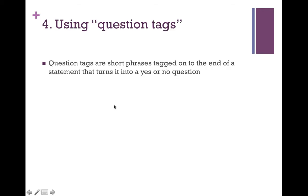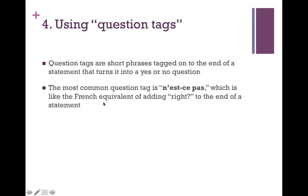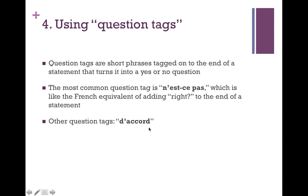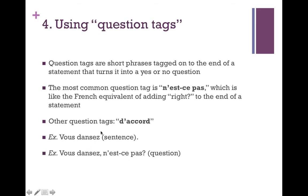The fourth and final way to make a question is something called question tags. Question tags are just short phrases tagged onto the end of a statement that turns it into a yes or no question. The most common question tag is n'est-ce pas, which is like the French equivalent of adding 'right?' to the end of a statement. For example, instead of saying 'we have homework,' you could say 'we have homework, right?' — that turns it into a yes or no question. Another common question tag is d'accord, which means 'okay' — you'd use this if you already want people to agree with you but you're just asking for reassurance. So our example becomes 'vous dansez, n'est-ce pas?' which means 'you dance, right?'